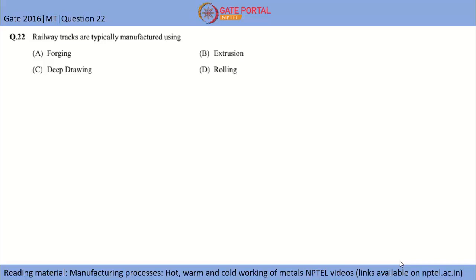This is question number 22, Gate 2016 Metallurgical Engineering. Railway tracks are typically manufactured using what process? A is forging, B is extrusion, C is drip drawing, and D is rolling.